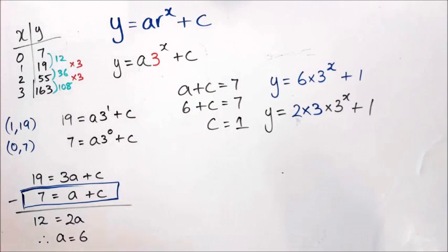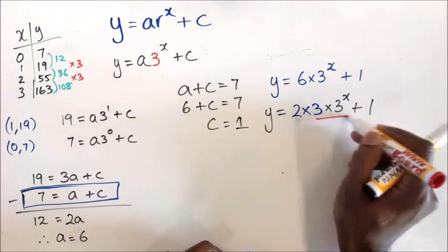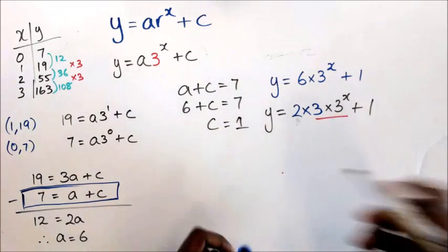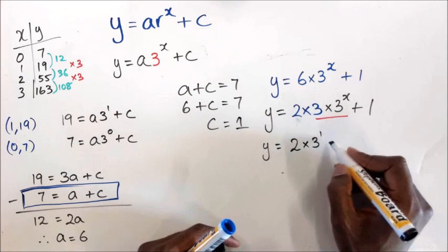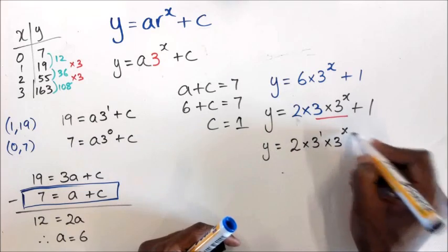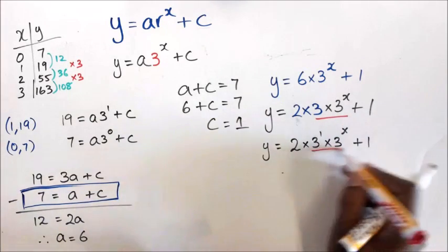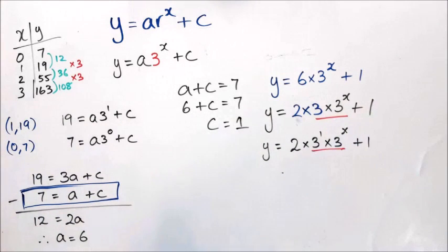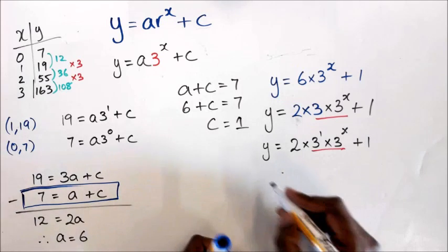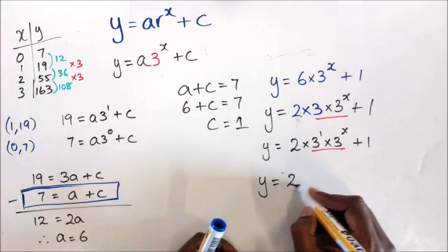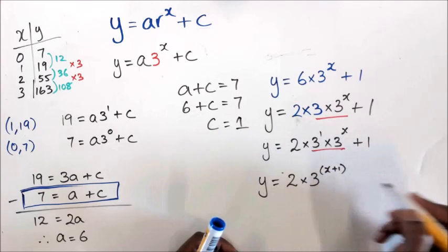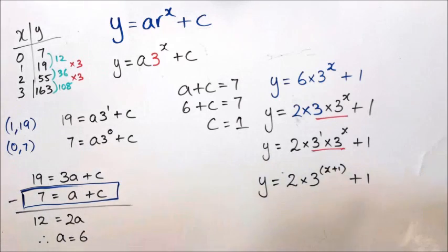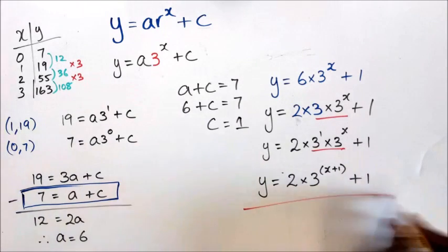The reason I did that is to combine these two 3s together. So I have y equals 2 multiplied by 3 to the power of 1, multiplied by 3 to the power of x plus 1. Since we're dealing with index functions with the same base, we add the powers. The final answer is y equals 2 times 3 to the power of x plus 2.